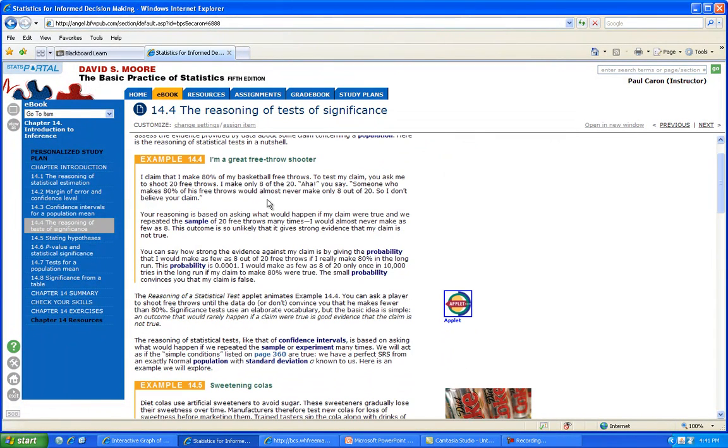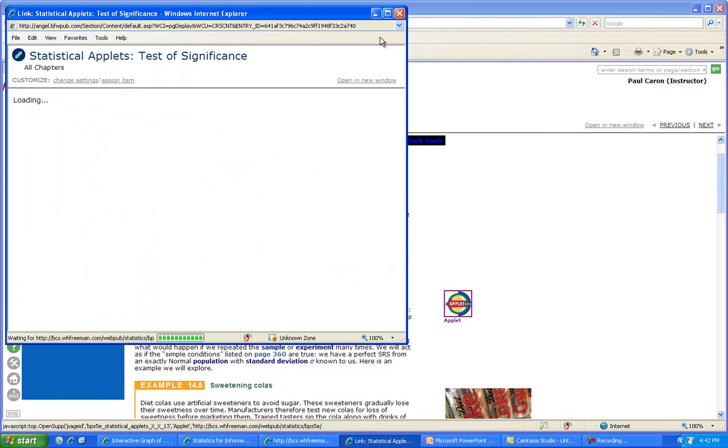Here's an example. You have a great free throw shooter who claims to make 80%. To test the claim, you ask them to shoot 20 free throws. They make only 8 out of 20. You say someone who makes 80% of free throws should never make only 8 out of 20, so I don't believe your claim. Your reasoning is based on asking what would happen if the claim were true and we repeated the sample of 20 free throws many times. They would almost never make as few as eight.